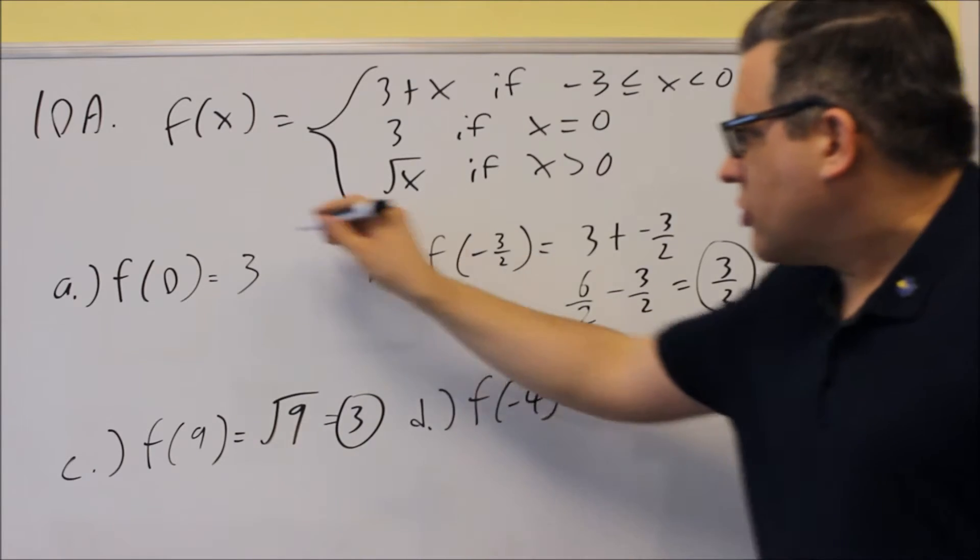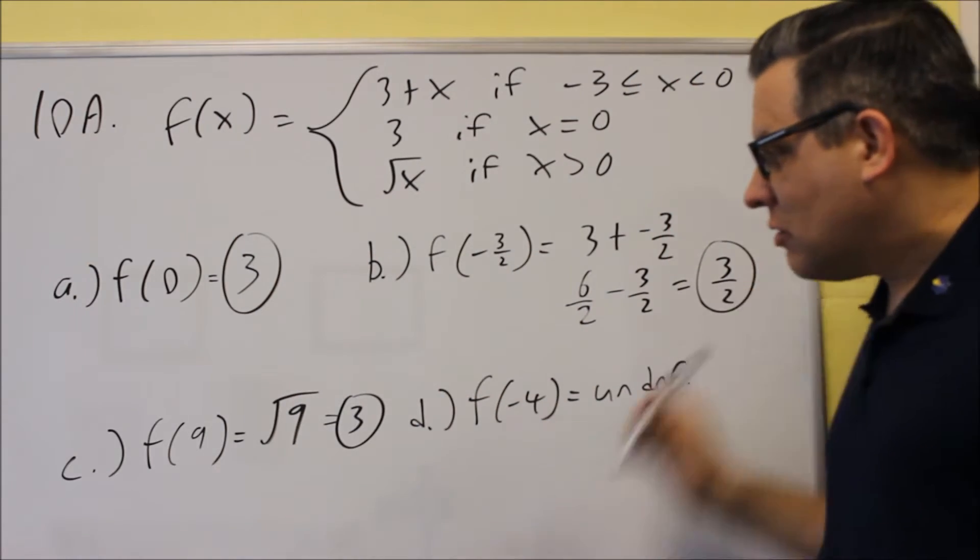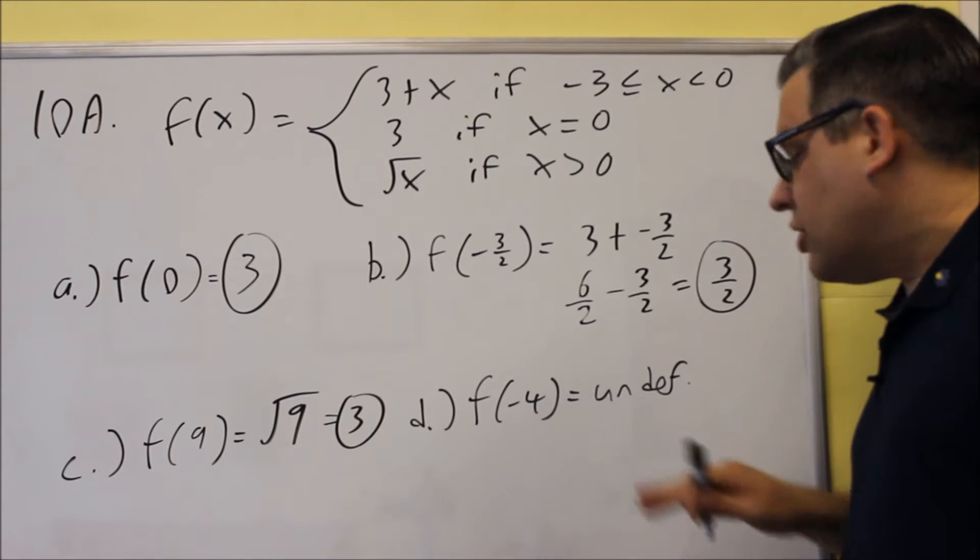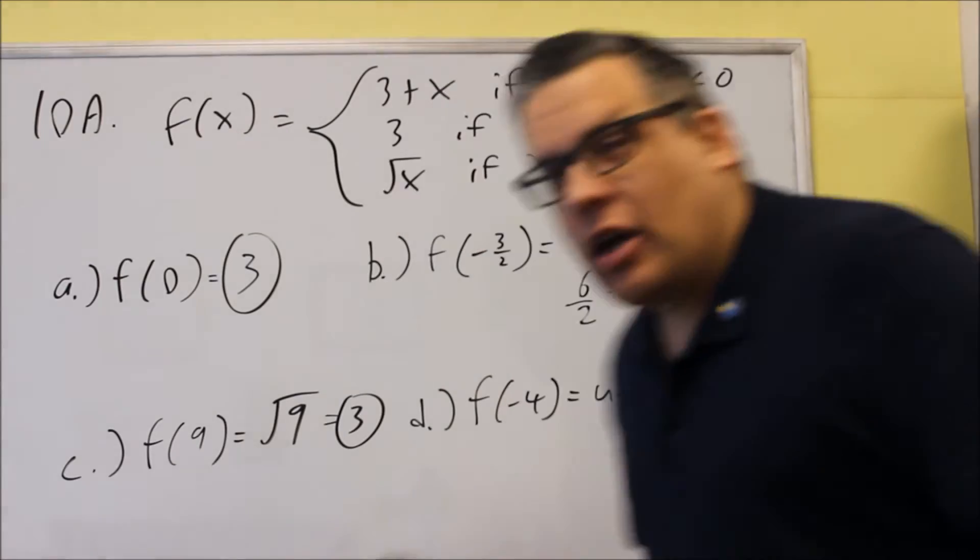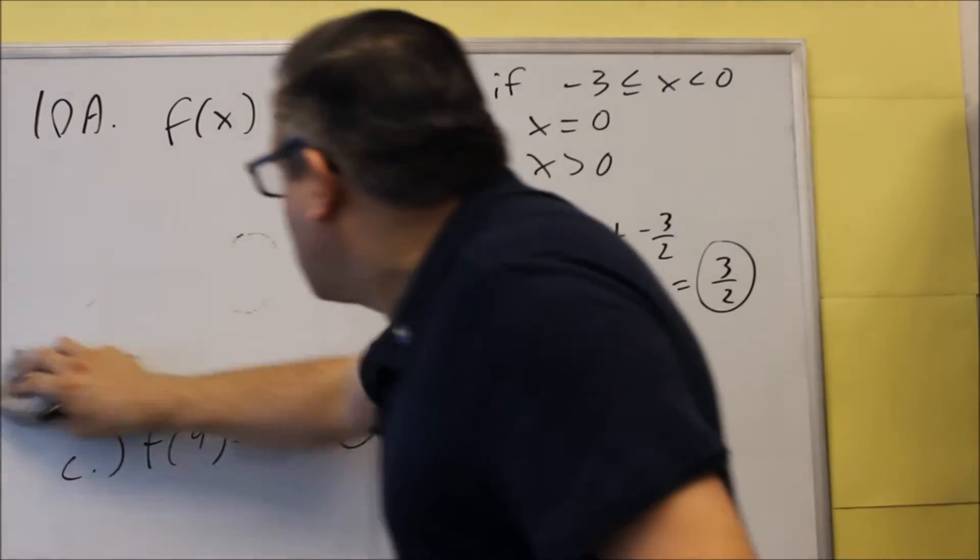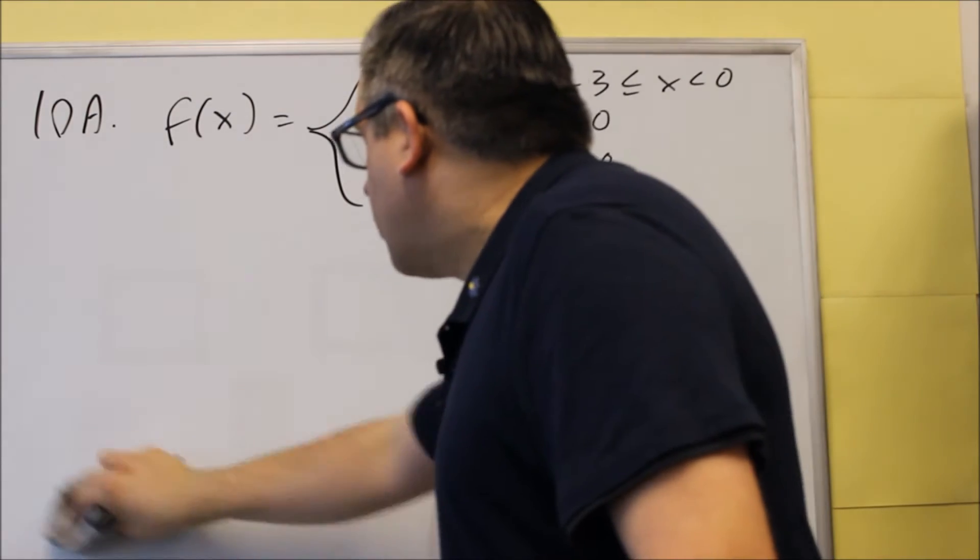So these are the answers. So again, the answer for A is 3. For B, it's 3 halves. C is 3. And D is going to be undefined. So now that we have this complete, we'll go ahead and erase this. And we're now going to go into the graph.